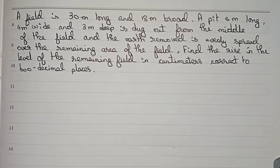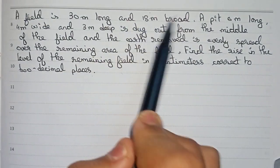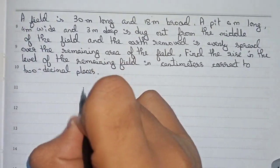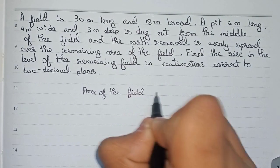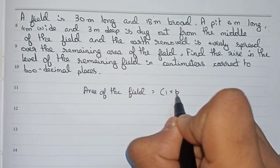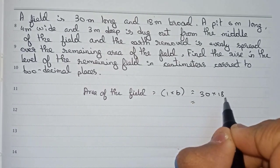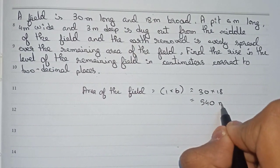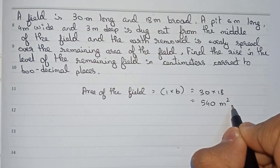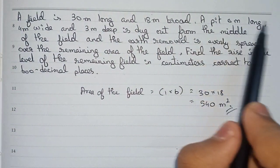So this is our question and I'll solve this. First, it is mentioned the field is 30 meters long and 18 meters broad, so we will find out the area of the field. Area of the field is equal to length into breadth, so 30 into 18, which becomes 540 meter square. This is the area of the field.